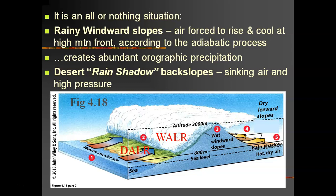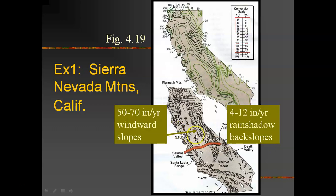The term you need to know for the back slopes — the nothing situation — is called a rain shadow. You wind up with hot and dry air since the air is now sinking and heating instead of rising and cooling. It's called the rain shadow effect, producing hot and dry conditions.